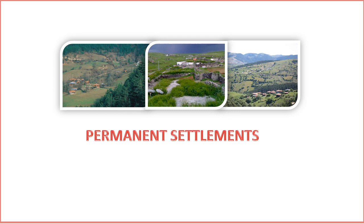8. Economic diversification. In addition to agriculture, some permanent rural settlements diversify their economic activities, including small-scale industries, artisanal crafts, or agro-tourism to supplement farming income. 9. Village markets. Permanent rural settlements often host weekly or monthly markets where local farmers and artisans sell their products, serving as economic hubs and social gathering places. Examples of permanent rural settlements in Turkey include: Derekoy, Canakkale — a traditional village with stone houses and agricultural landscapes; Sirince, Izmir — known for its historic architecture, vineyards, and olive orchards; Mustafapasa, Nevsehir — located in the Cappadocia region, known for its unique cave dwellings.